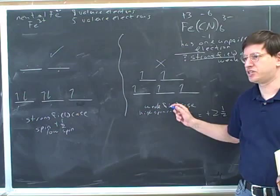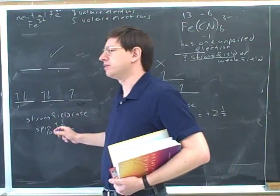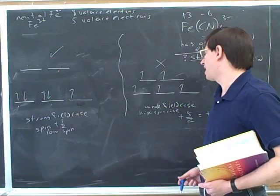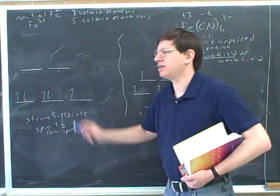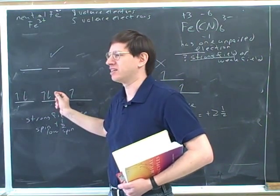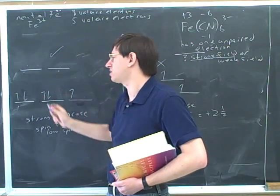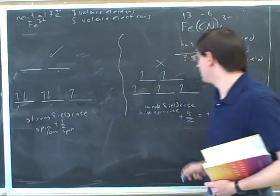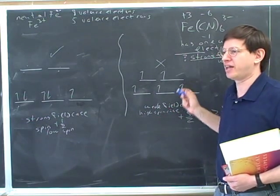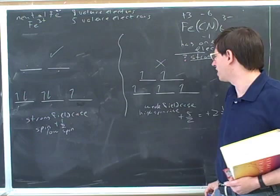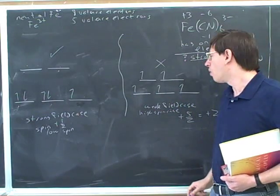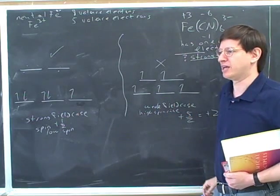Another name for weak field is high spin. And another name for strong field is low spin because if you think about it, there's always likely to be a higher spin here than here because in the strong field case the electrons pair up more easily. They tend to cancel each other out. Whereas in the weak field case we postpone as long as possible pairing up the electrons. So if you work through a couple of examples you can convince yourself that the weak field always tends to be a higher spin than the strong field or at least it's going to be at least as big or bigger of a spin.